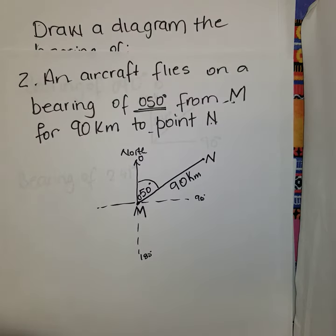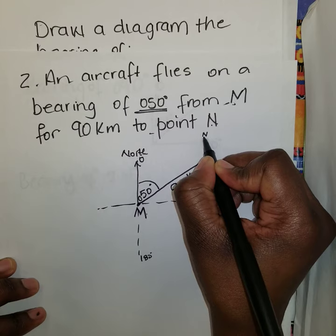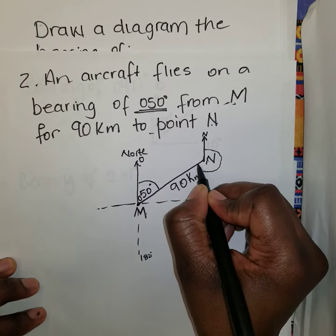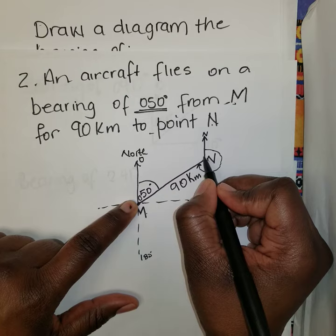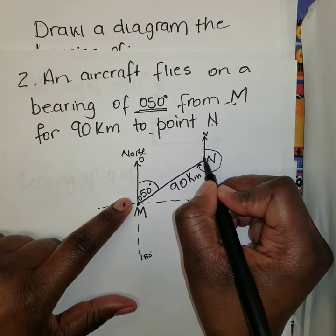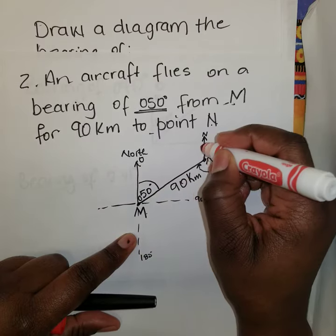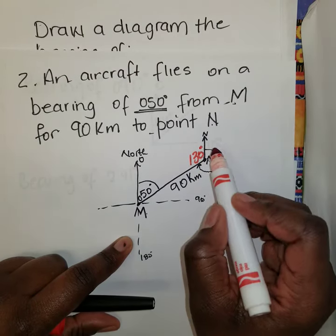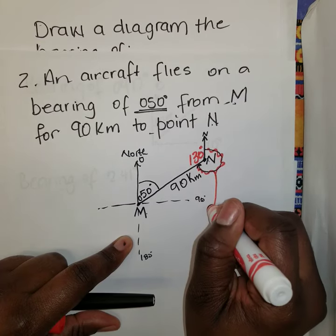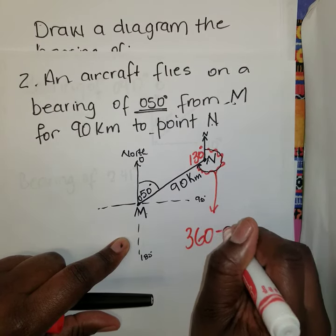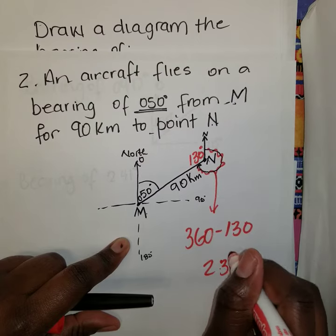If we want to travel from N back to M, we draw another north line at N, making the line MN the transversal between the two parallel north lines. Using co-interior angles, since this angle at M is 50 degrees, the co-interior angle at N is 130 degrees. Then using angles at a point — 360 subtract 130 — the bearing from N to M is 230 degrees.